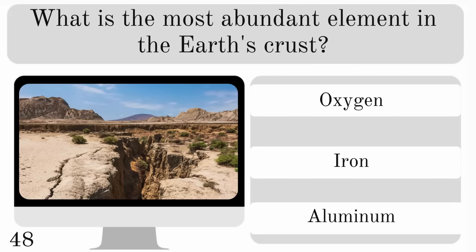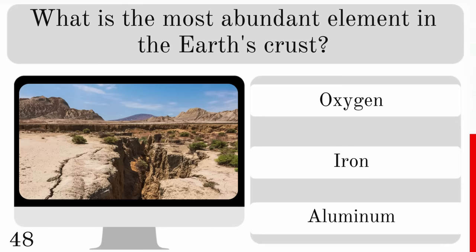What is the most abundant element in the Earth's crust? Is it oxygen, iron or aluminium? The answer is oxygen.